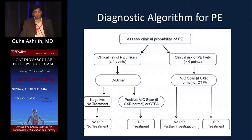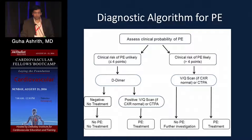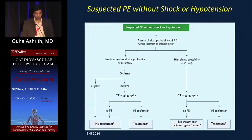Based on the Wells score and calculated pretest probability, if low probability you get a D-dimer; if positive, proceed to CTPA or V/Q scan depending on availability. If intermediate to high probability, go straight to CTPA protocol.